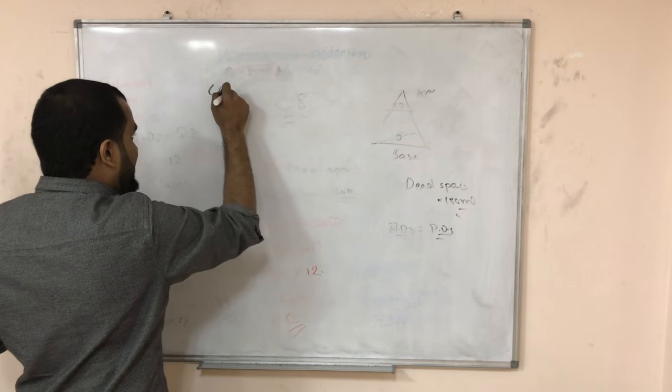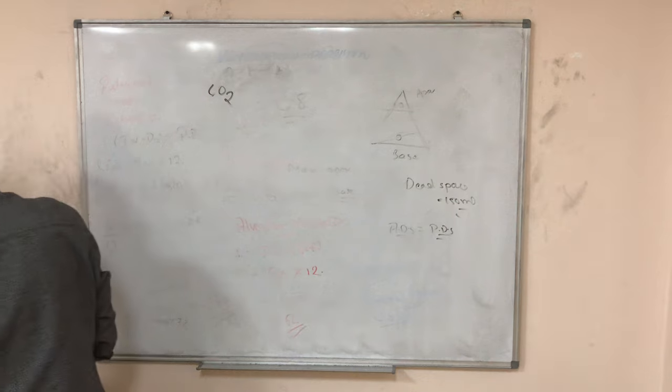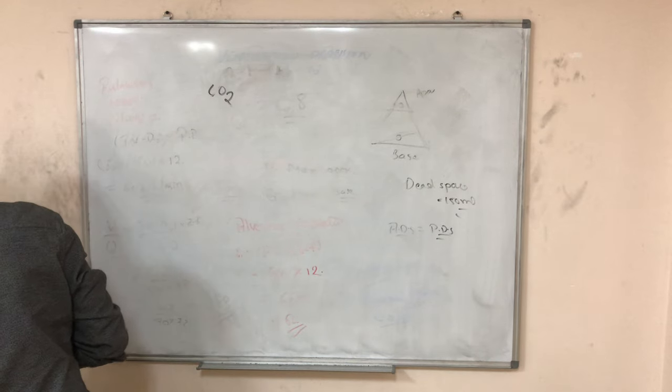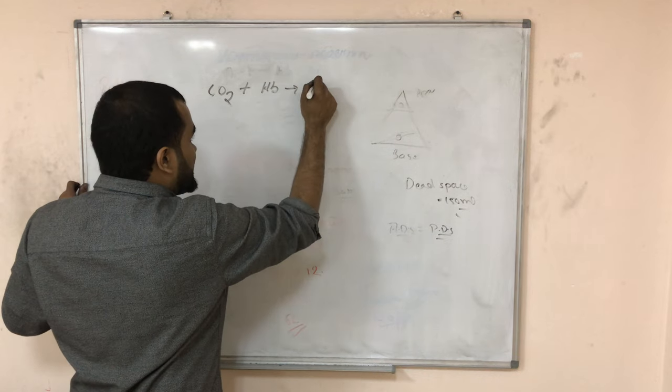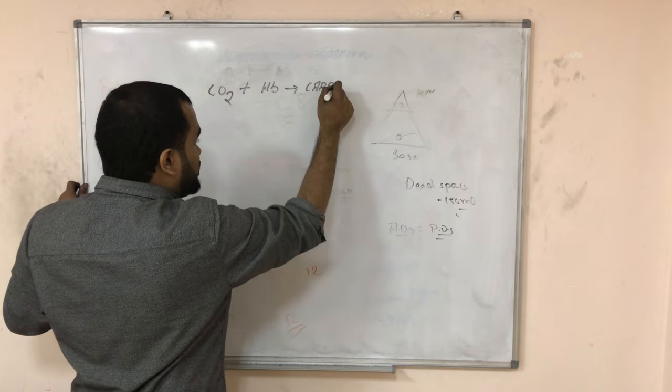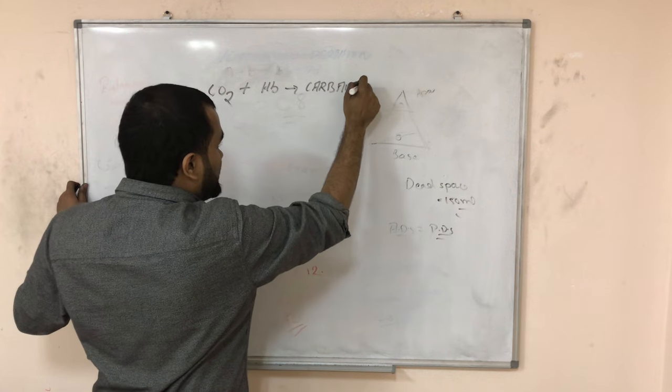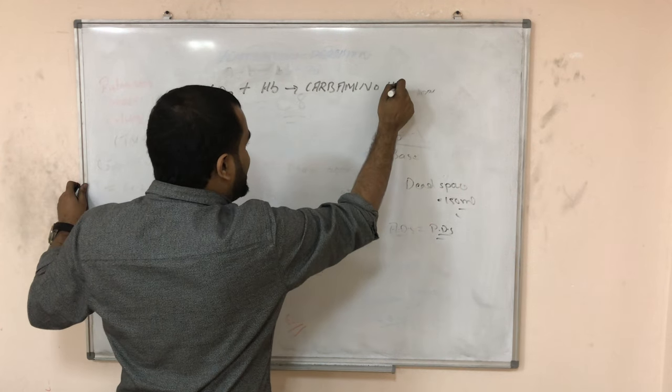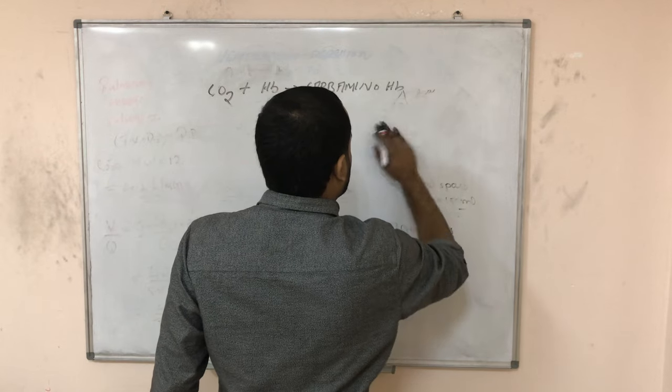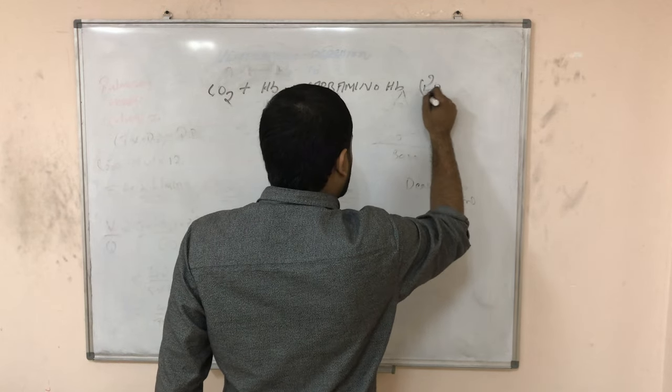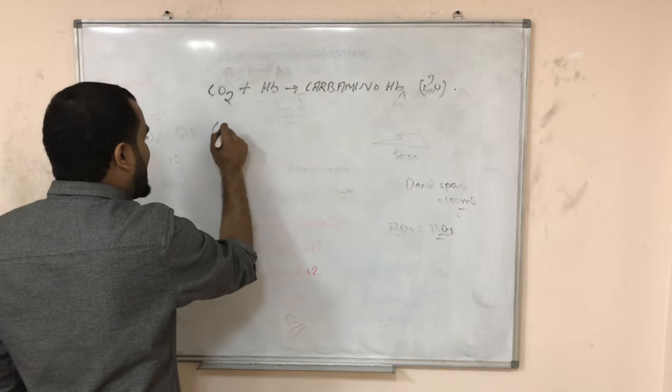First of all, carbon dioxide. See, CO2 plus hemoglobin gives carbaminohemoglobin. The affinity for carbon dioxide is around 20.